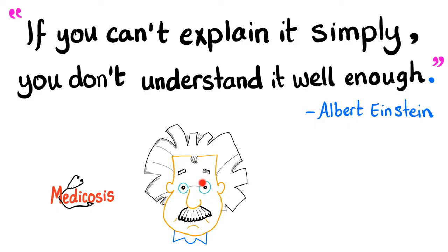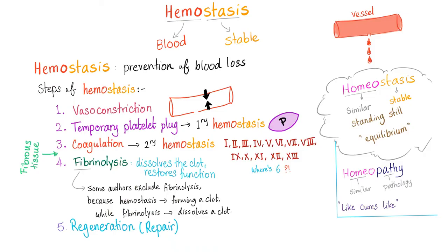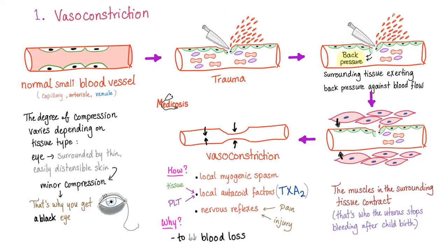Why is this side larger than this one? Because it's relative. Hemostasis is the process of prevention of blood loss by stopping bleeding. Steps of hemostasis: vasoconstriction, then primary hemostasis — the platelet — and then secondary hemostasis, which is the coagulation factors, then fibrinolysis.